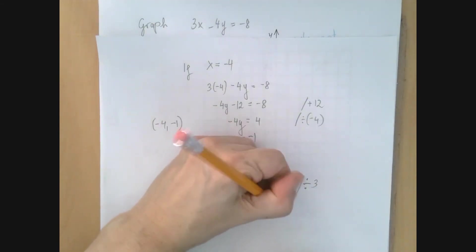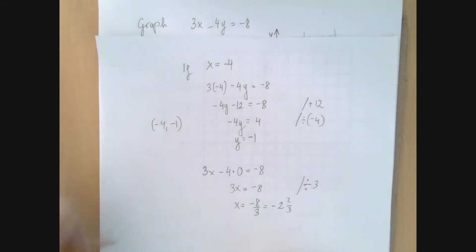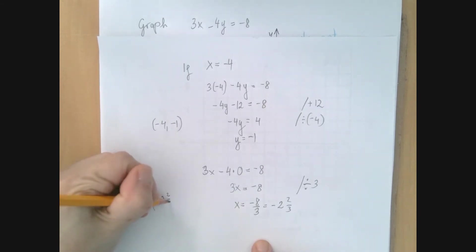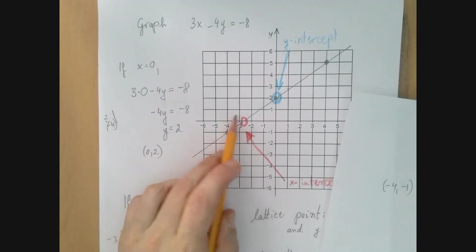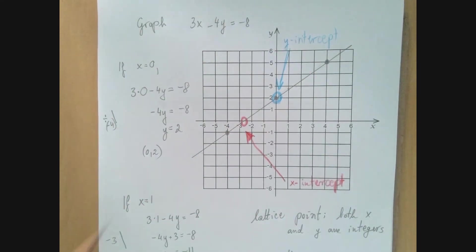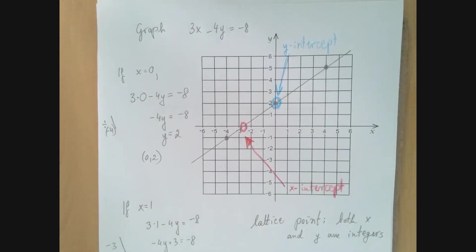That's almost negative 3, right? That's negative 2 and 2/3. So what we found is the point (negative 2 and 2/3, 0), and that agrees with what we see on the graph. So it is probably correct. Thank you for watching.